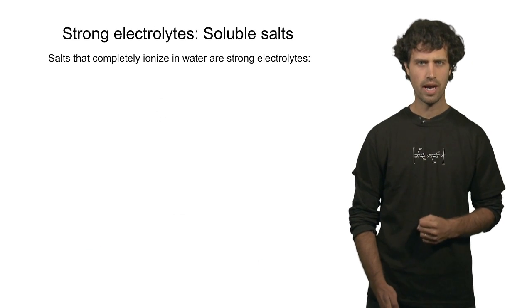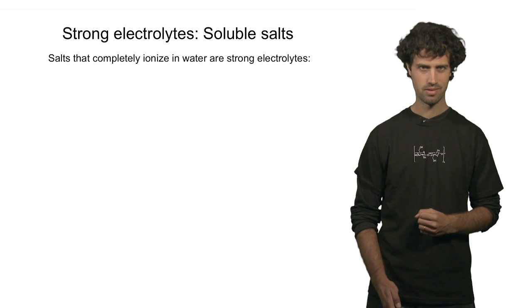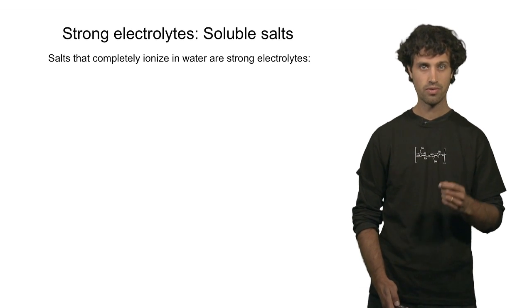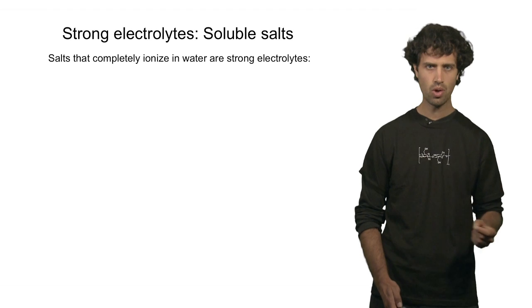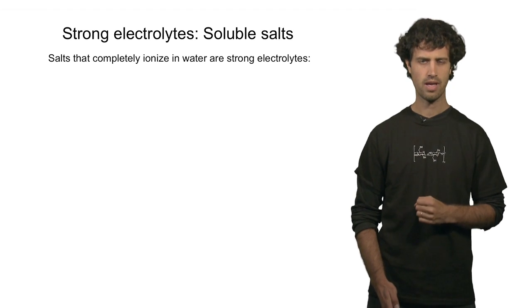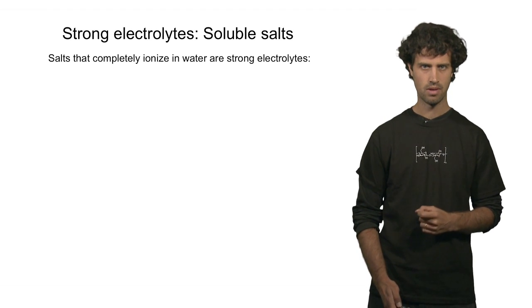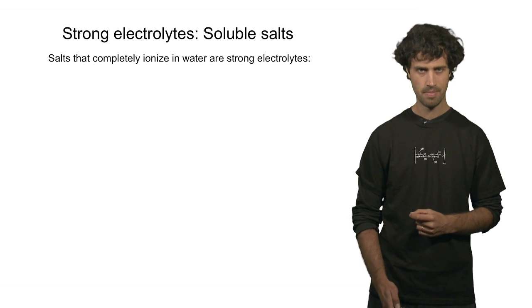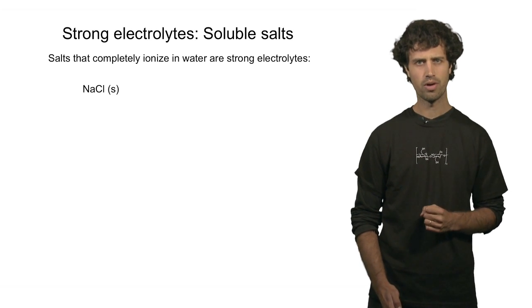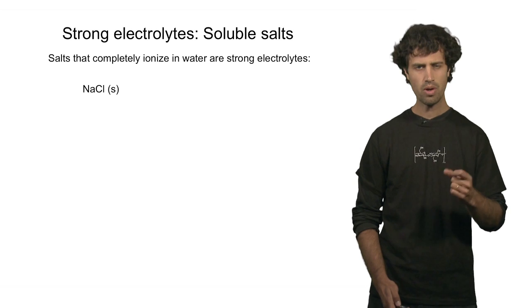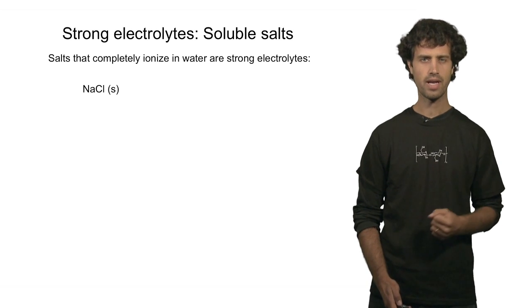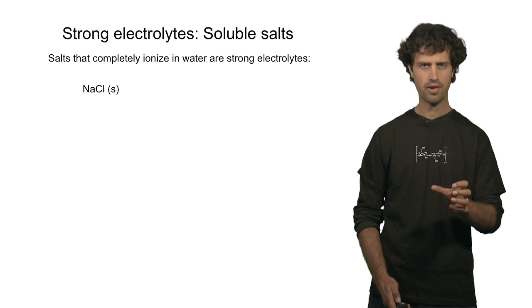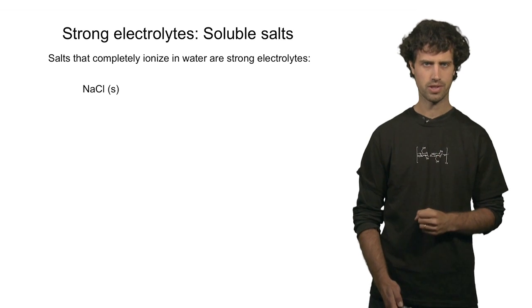Let us have a closer look at strong electrolytes. Strong electrolytes are produced, for instance, by salts that fully dissolve in water. Sodium chloride is such a salt. In its solid form, sodium chloride consists of chlorine ions and sodium ions that are held together in a lattice by electrostatic forces.